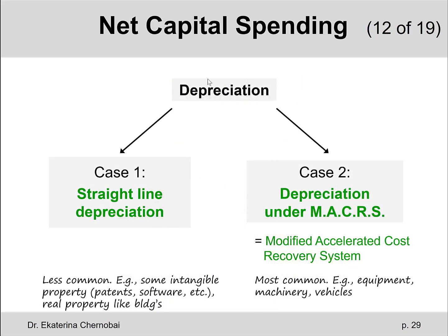There are two commonly used methods for depreciation of different assets. Case one is the so-called straight-line depreciation. Case two is depreciation under MACRS, which stands for Modified Accelerated Cost Recovery System. Straight-line depreciation is not as common as case two, and every asset follows either straight-line or MACRS depreciation — that information is always given.